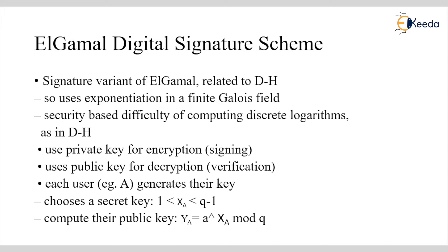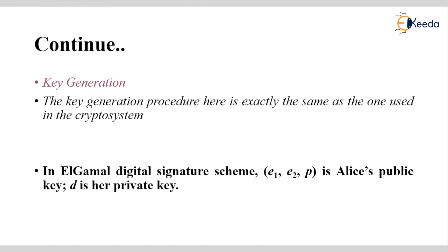Each user generates their own key pair. The secret key xa must satisfy: 1 < xa < q−1. The public key ya is then computed using the equation: ya = a^xa mod q, where q is any prime number. This key generation process is exactly the same as used in the ElGamal crypto system.